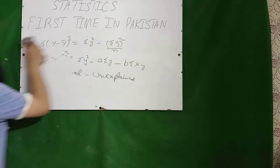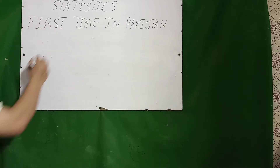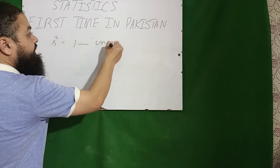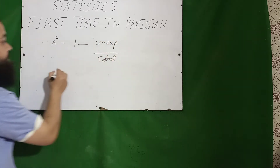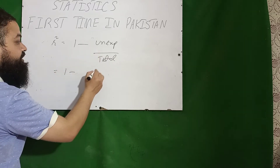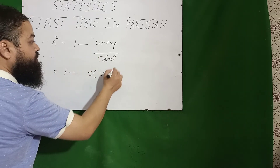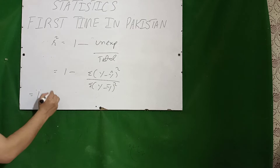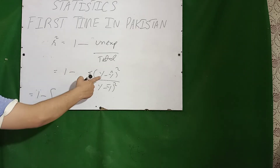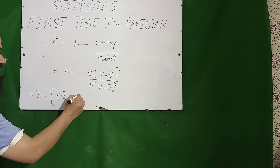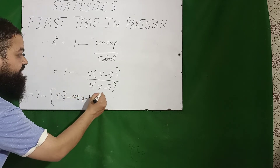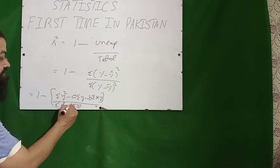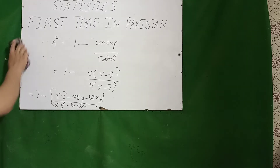As I told you, R-square is equal to explained over total. It can also be written as 1 minus unexplained over total variation. That will be 1 minus Σ(y − ŷ)² over Σ(y − ȳ)², which equals 1 minus [Σy² − aΣy − bΣxy] divided by Σy² − (Σy)²/n.